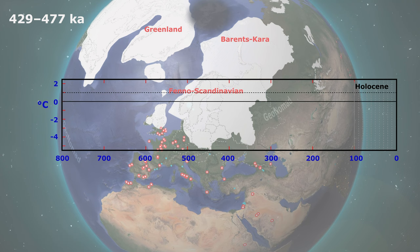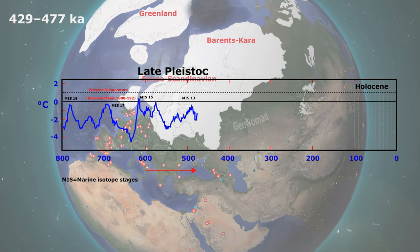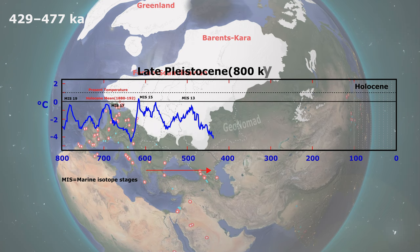622,000 years ago, the Earth warmed up again and entered an interglacial period. Since then, the Earth's temperature has gone up and down little by little. Then around 477,000 years ago, the glacial period began again.